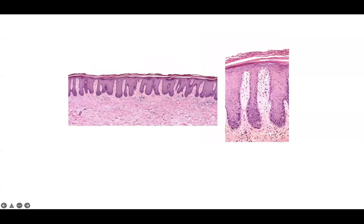Next case — how would you classify this inflammatory pattern? Hopefully by now you appreciate really good hyperplasia; some people would call this psoriasiform hyperplasia. You'll notice that the distance between the top of the dermal papilla and the stratum corneum is quite thin — that's suprapapillary plate thinning.